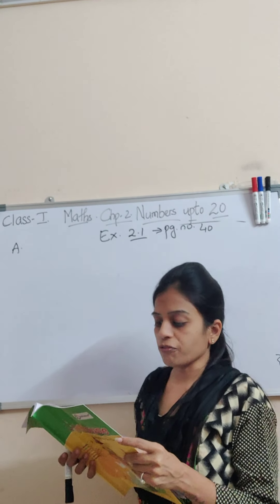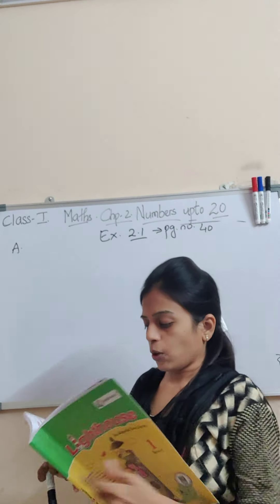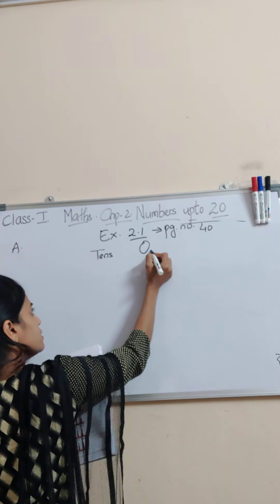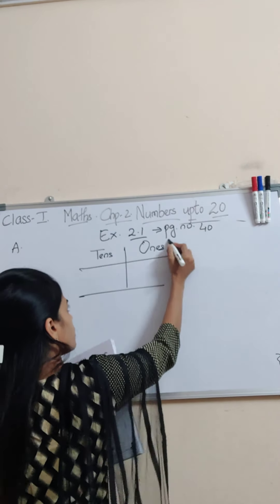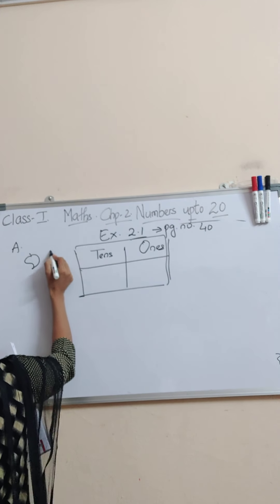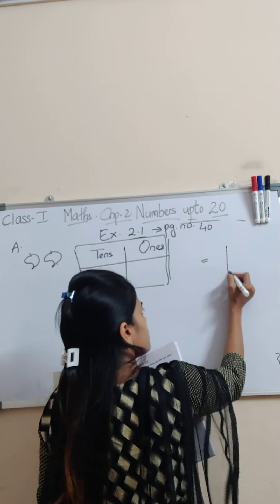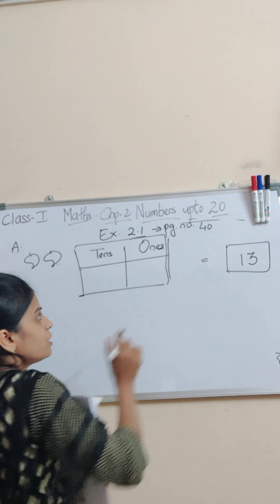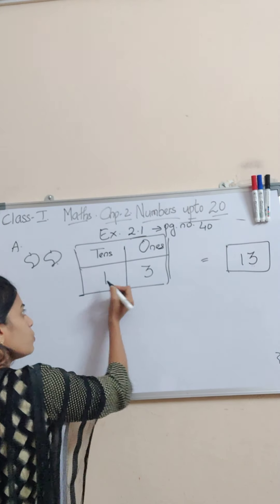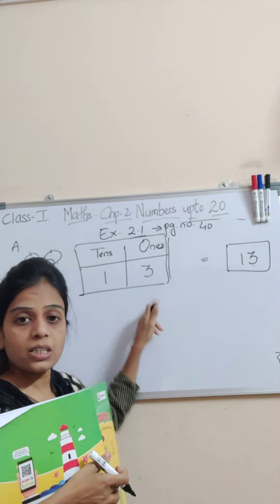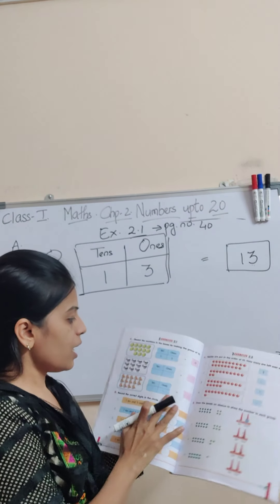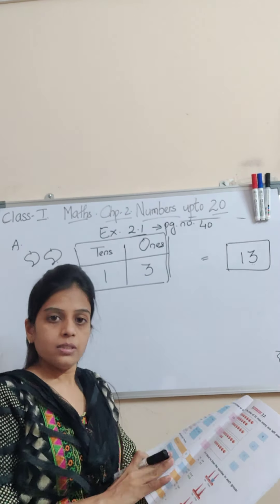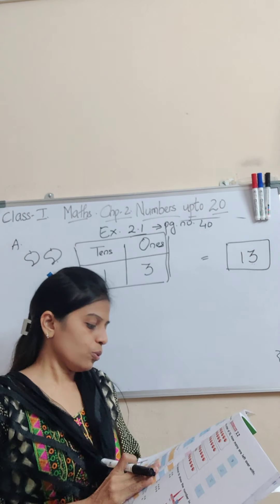You have to count each figure. In the first one, there are some mangoes — you have to count the mangoes. There is a box for 10's and a box for 1's. Here there are 13 mangoes total. So in the 1's place we write 3, and in the 10's place we write 1 — making 13. I hope you will all do the next two bits: one has a box of objects and another has a bird. Count and write how many 10's and how many 1's.